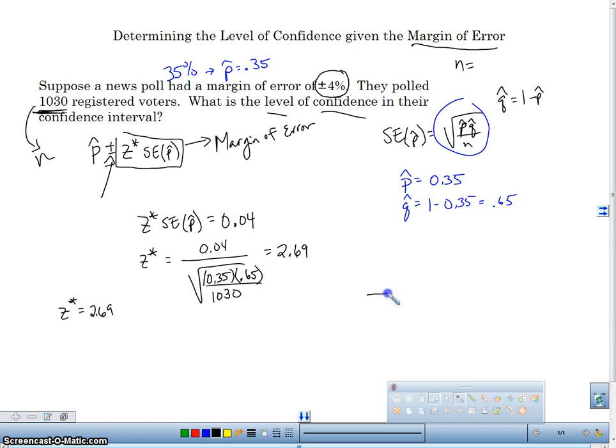So here's what I'm doing here. Level of confidence. This is my normal model. And I'm going to have plus or minus 2.69. So I'm going to have over here, negative 2.69. And over here, positive 2.69. And I want to find this middle percent right here.